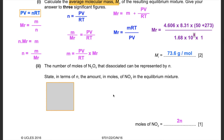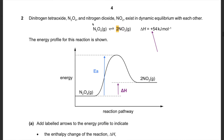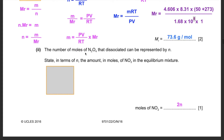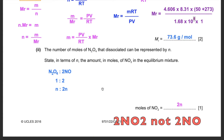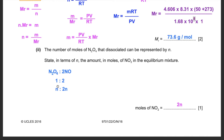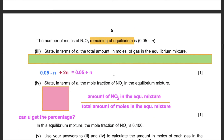Let n represent the number of moles of dinitrogen tetraoxide that dissociated. In terms of n, the amount of moles of nitrogen dioxide in the equilibrium mixture: from the equation, 1 mole of N₂O₄ produces 2 moles of NO₂. So if n moles of N₂O₄ dissociate, the moles of NO₂ formed is 2n. The moles of N₂O₄ remaining at equilibrium is 0.05 − n.